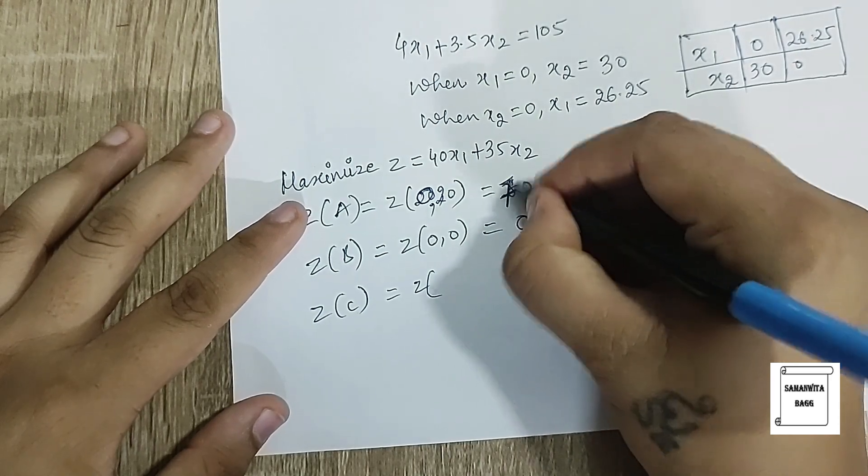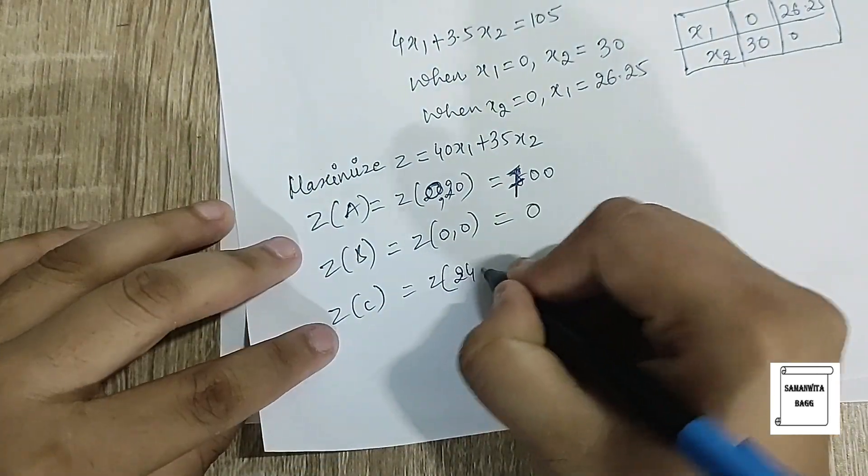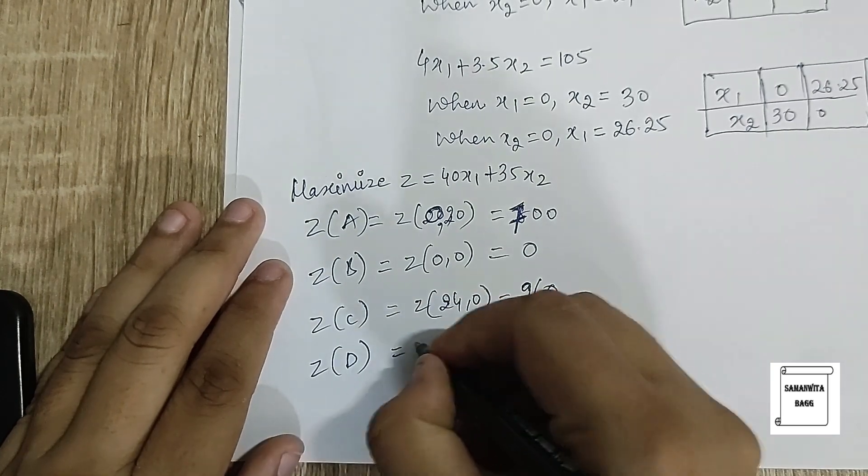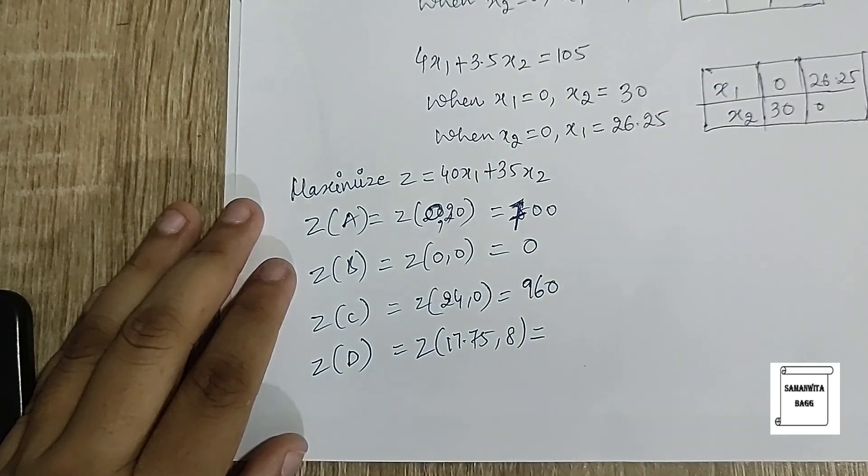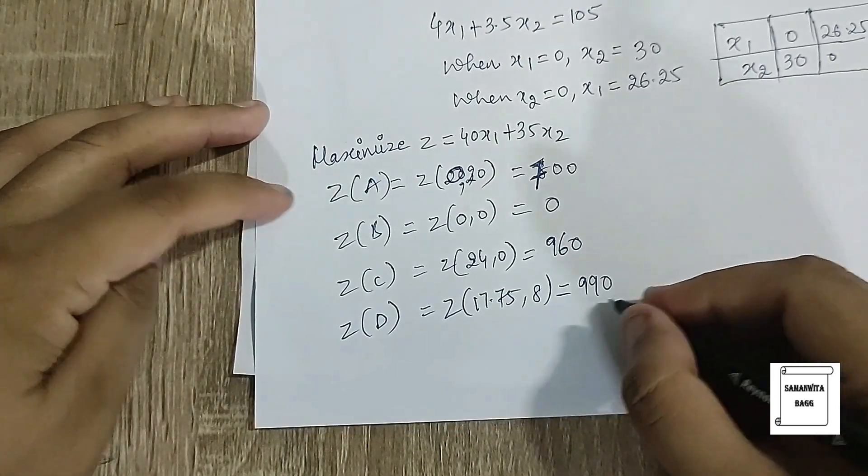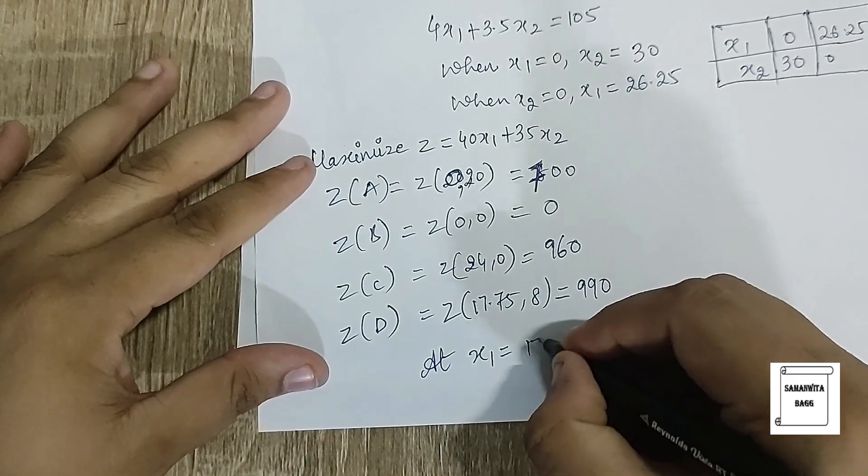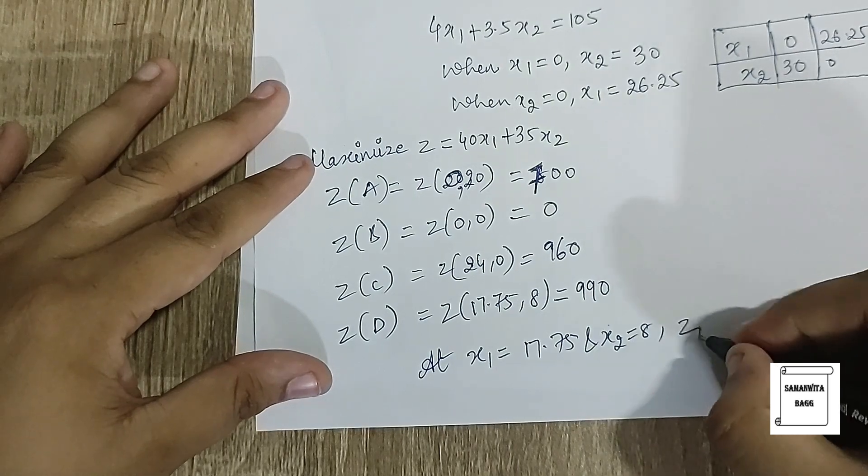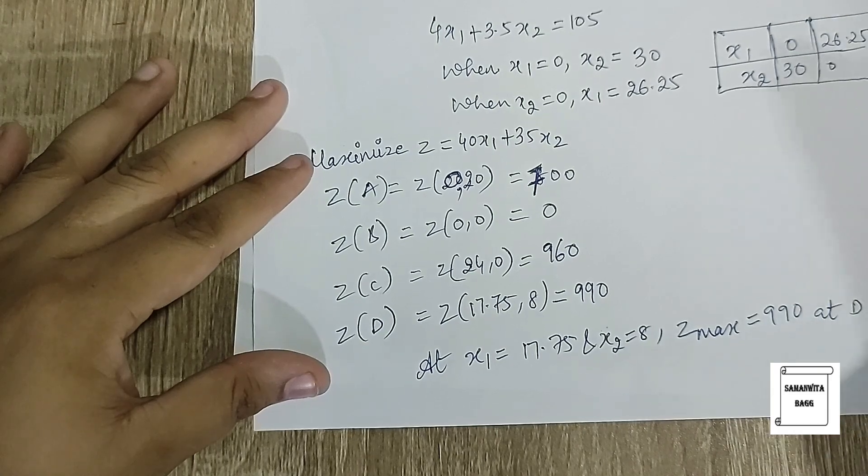For C (24, 0), this is 960, and for D (17.75, 8), this value will be 990. So you can see this is clearly the maximum point. At x₁ = 17.75 and x₂ = 8, Z is maximum, that is 990 at D.